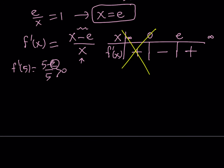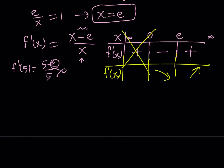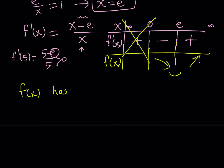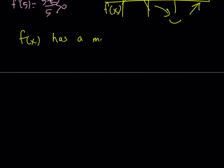So we're going to forget about negative values totally and only focus on the intervals from 0 to e and e to positive infinity. What does this tell us? If f prime is negative on an interval the function is decreasing, and if f prime is positive the function is increasing. This tells us that at x equals e our function has a minimum. So f of x has a minimum at x equals e.